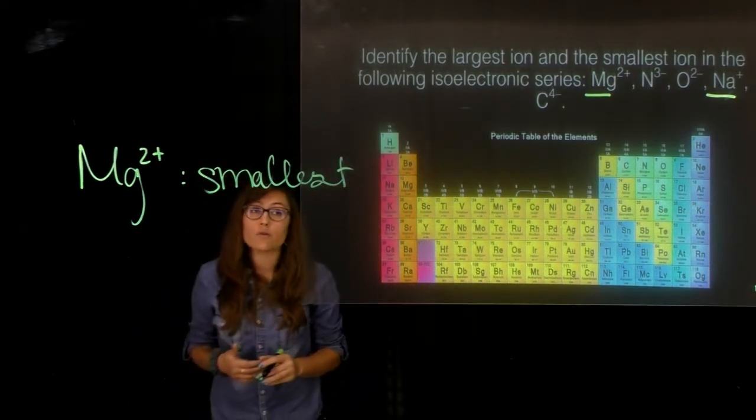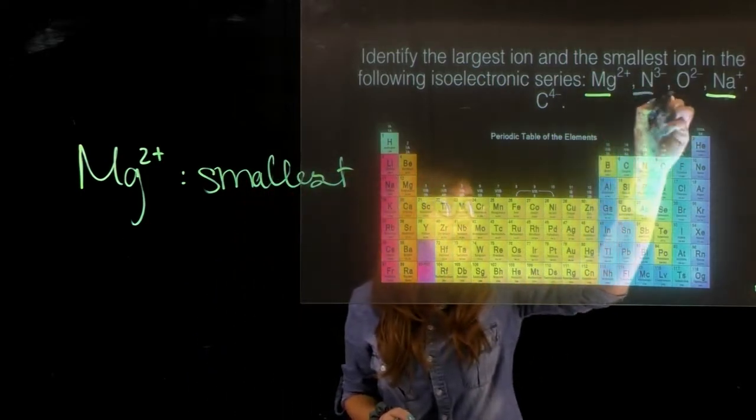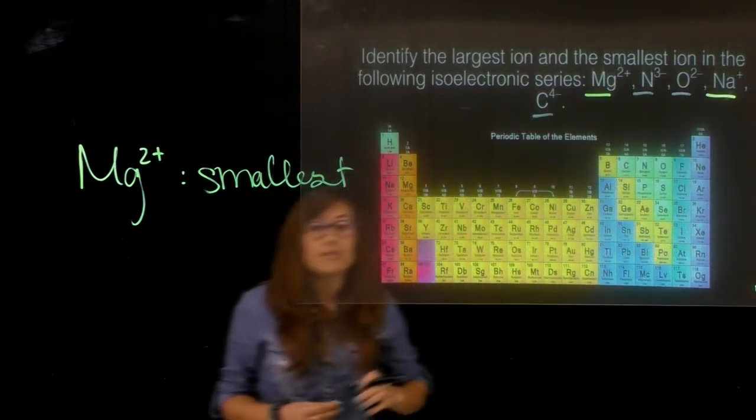Let's go ahead and identify which one is going to be the largest. Let's identify my anions. I have N3 minus, O2 minus, and C4 minus.